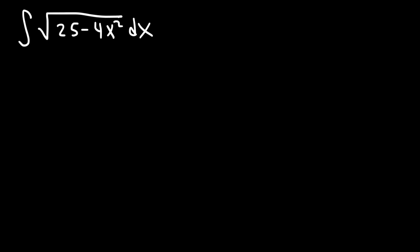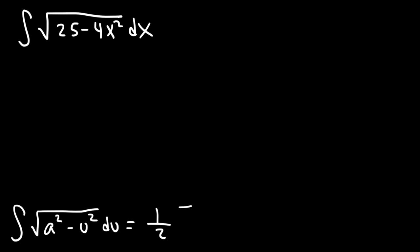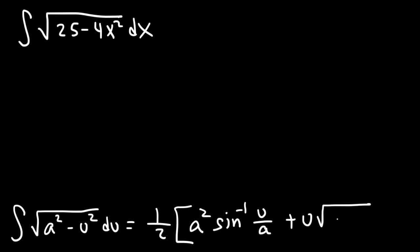You need to know which formula to use in order to find the answer. Here's the formula: the antiderivative of the square root of a squared minus u squared du is equal to one half times a squared times arcsin(u/a) plus u times the square root of a squared minus u squared, plus C.